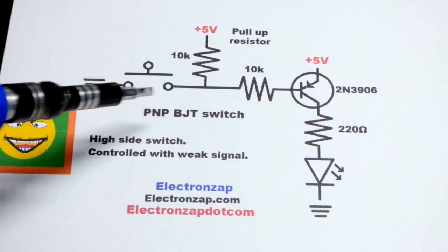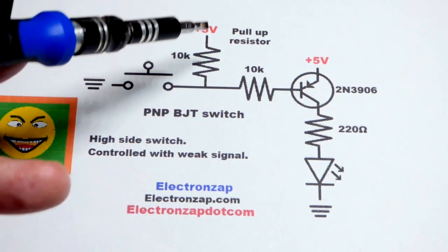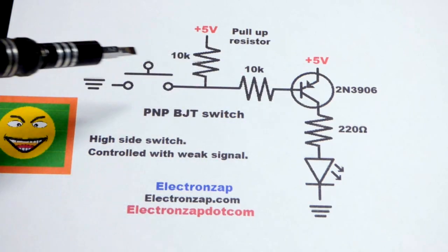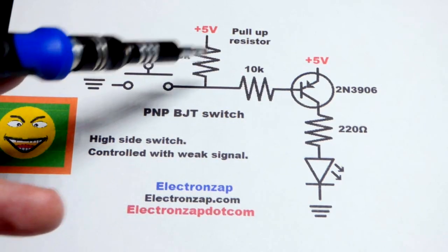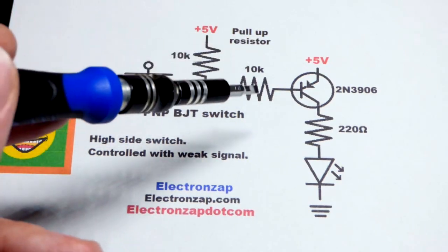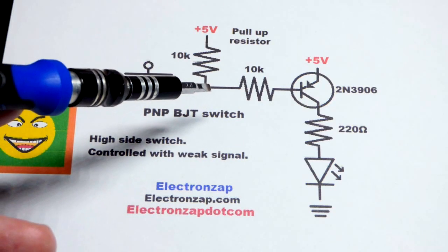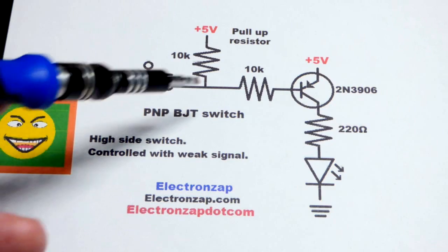Once we close the switch though, then we will have that little current path. Any current getting through this resistor will get sucked right to ground. So as far as the transistor is concerned when the switch is closed, that resistor, the pull-up resistor, holds up the voltage till we close the switch, then the voltage will drop to zero at this point.